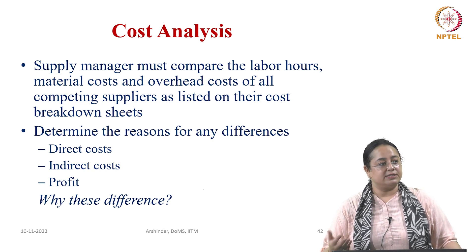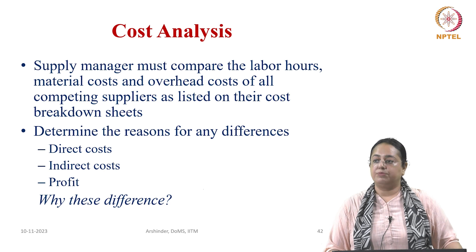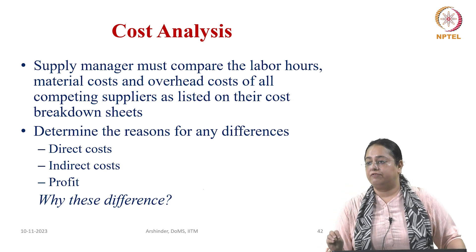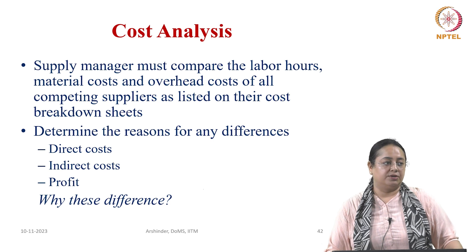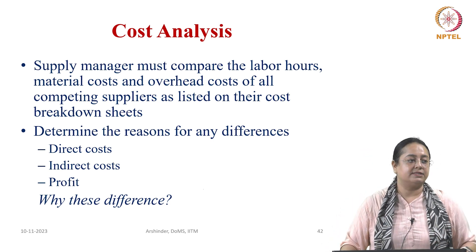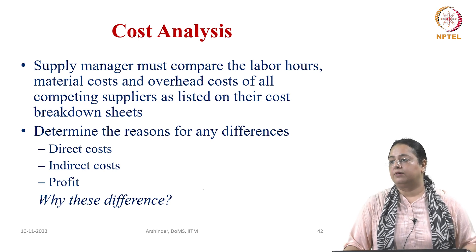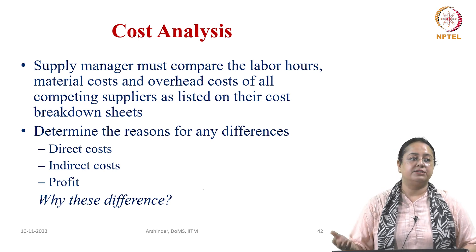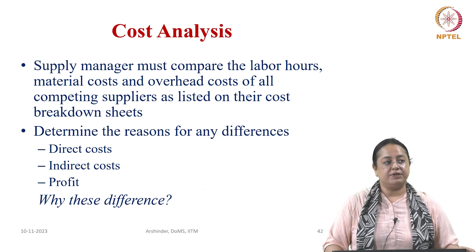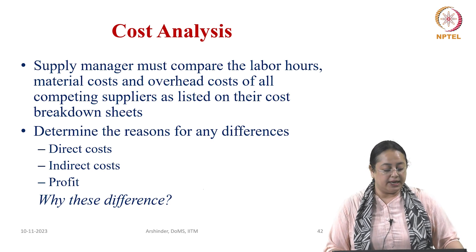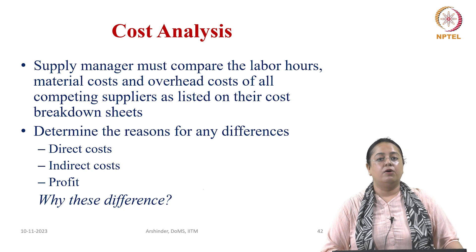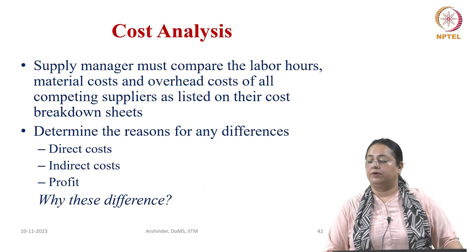Direct costs are the costs contributed by parts or components which go into the finished goods. Indirect costs are all other things — energy, water, electricity, tools, and machinery which are used. All those are indirect costs. This is very important and one must be aware of this.